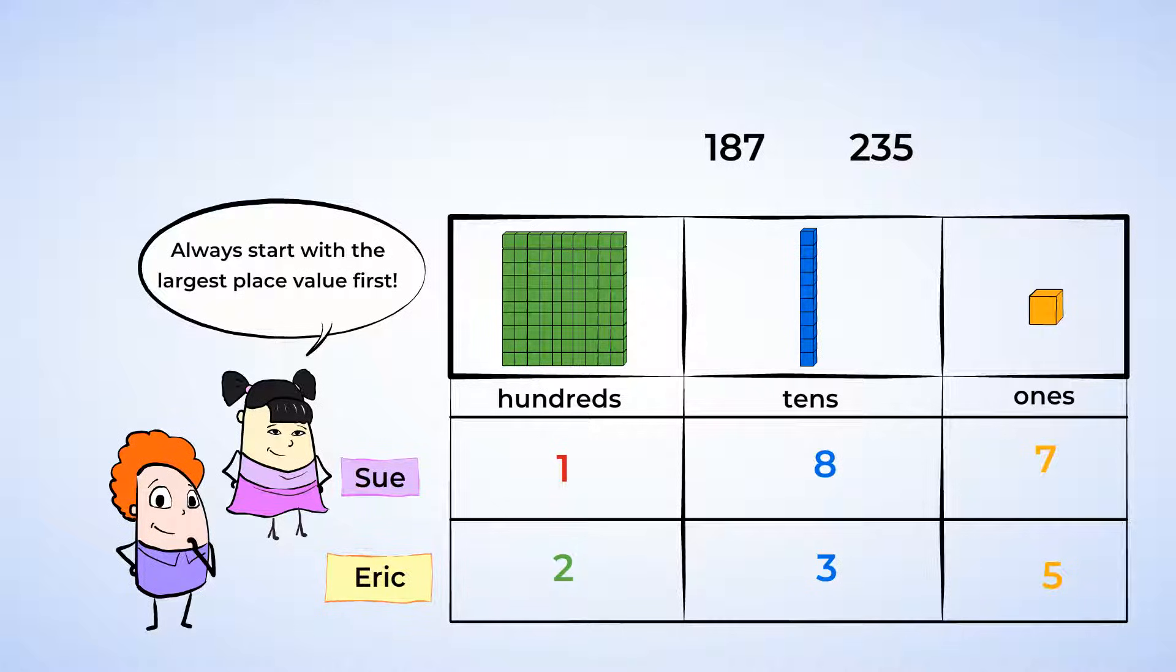So Sue's score has a 1 in the hundreds place, and Eric's score has a 2 in the hundreds place. 1 is less than 2, so Sue's score is less than Eric's score, and Eric is the winner. Congrats, Eric!